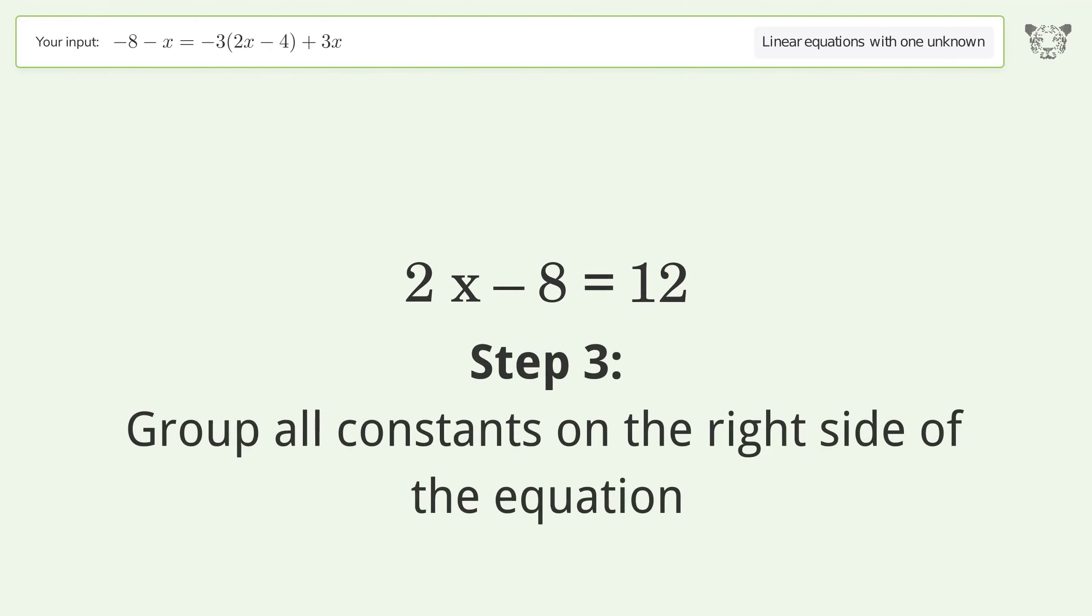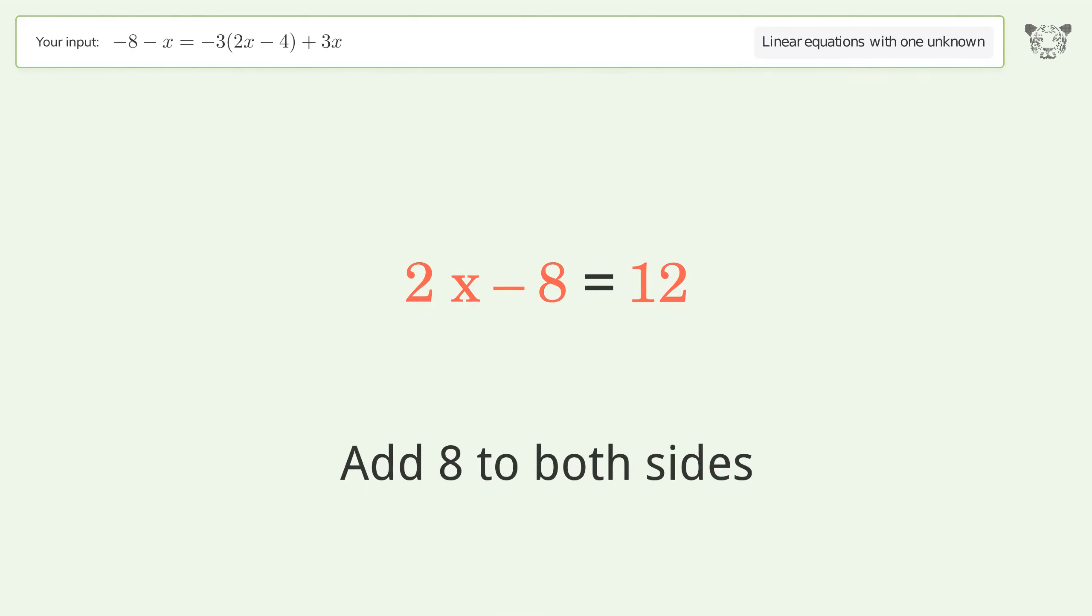Group all constants on the right side of the equation. Add 8 to both sides. Simplify the arithmetic.